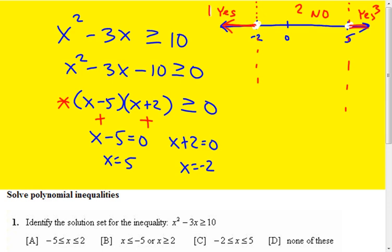So this is my solution set, which would be all x's less than or equal to negative two, and all x's greater than or equal to five.